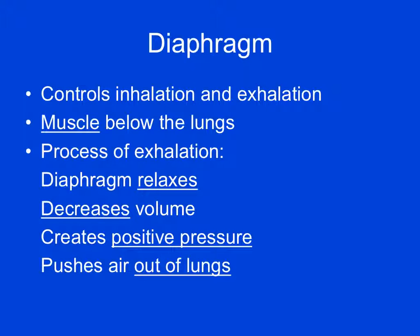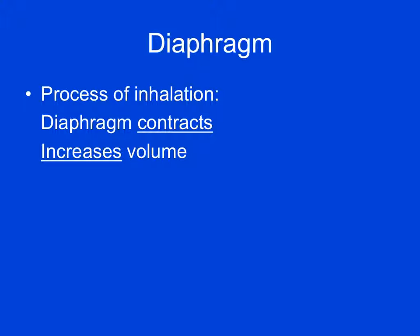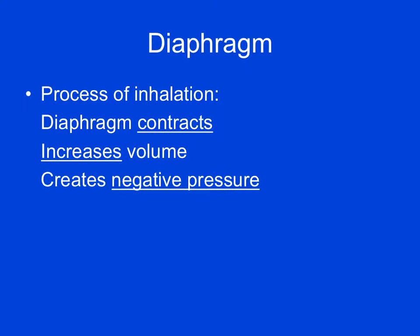If we look at the process of inhalation, it is basically reversed. When we inhale, the diaphragm contracts and moves downward in the thoracic cavity, increasing the volume within the thoracic cavity. That generates a negative pressure, which is essentially a vacuum. Air pressure works by flowing from areas of high pressure to areas of low pressure, and a vacuum is the lowest pressure you can get. So air flows from the high pressure outside the body to the low pressure inside, and that negative pressure pulls the air down into the lungs.